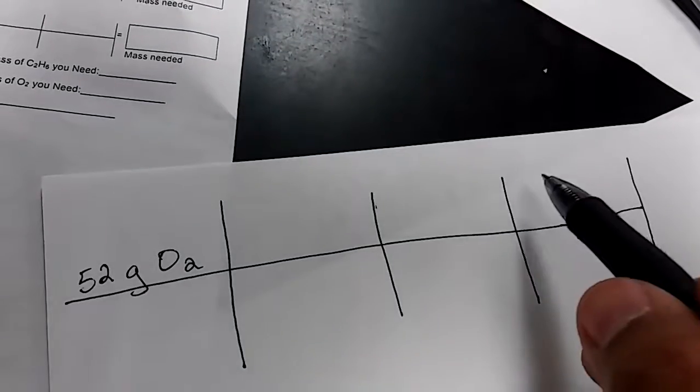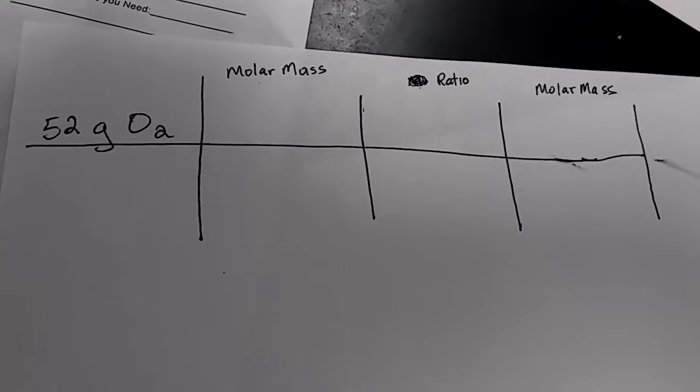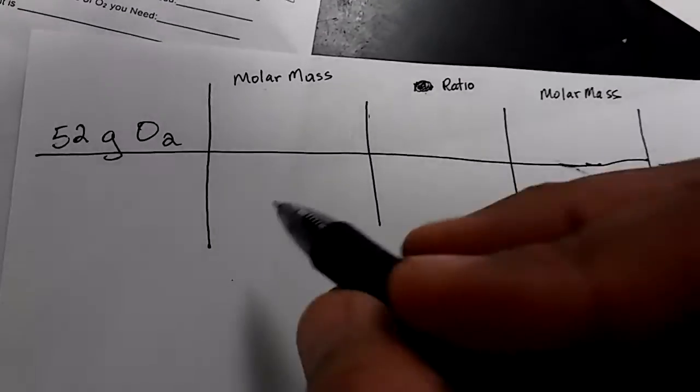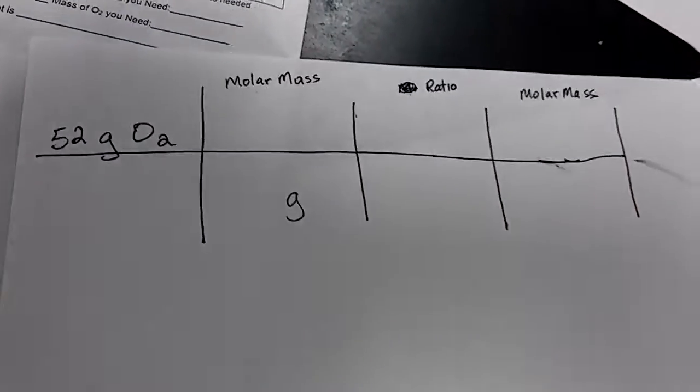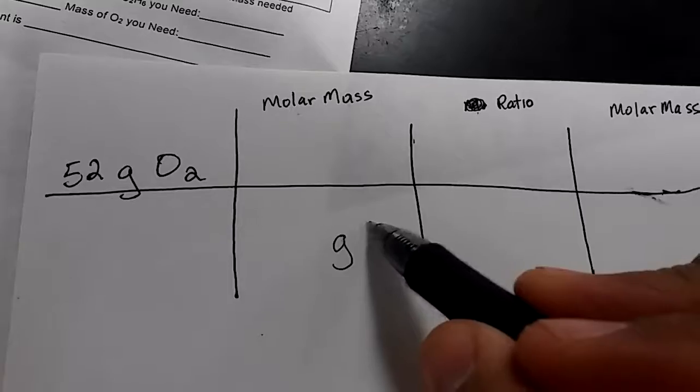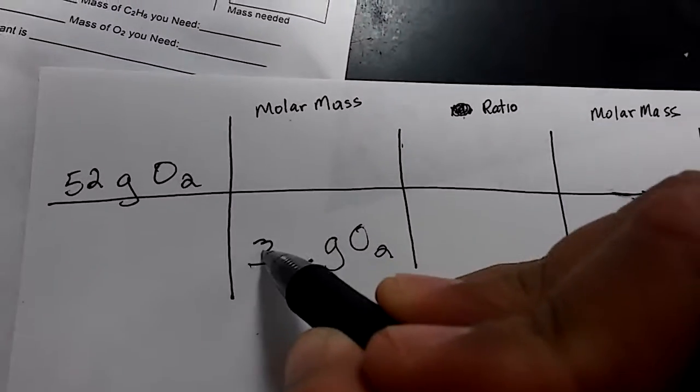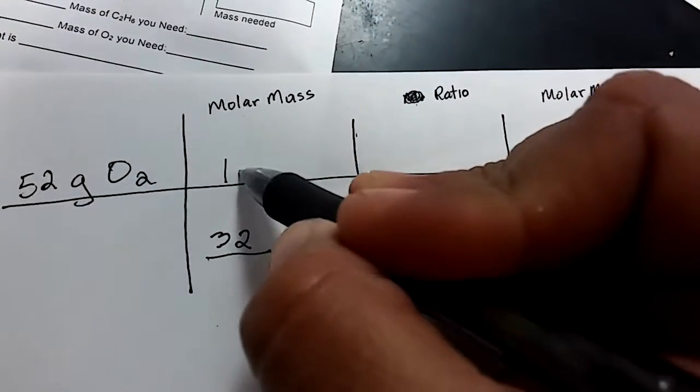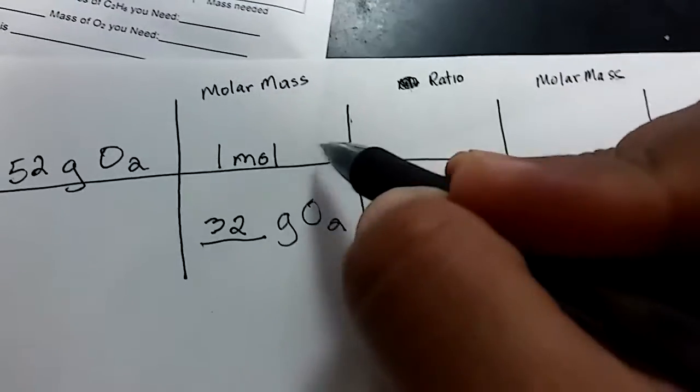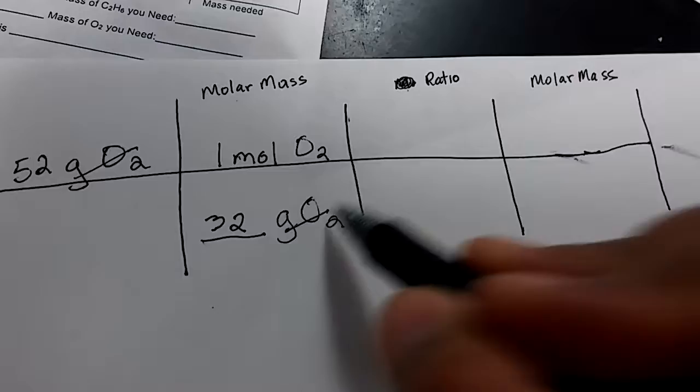The steps are going to be the same. It's going to be molar mass, ratio, molar mass. Remember that we're trying to find the mass of CO2, so I need to make sure that this diagonally cancels. We already know what the mass of O2 is. We know that it's 32. And then again, we need to realize that with molar mass, we always have one mole of that same substance. So it's one mole of O2. This allows us to cancel grams of O2 with grams of O2.